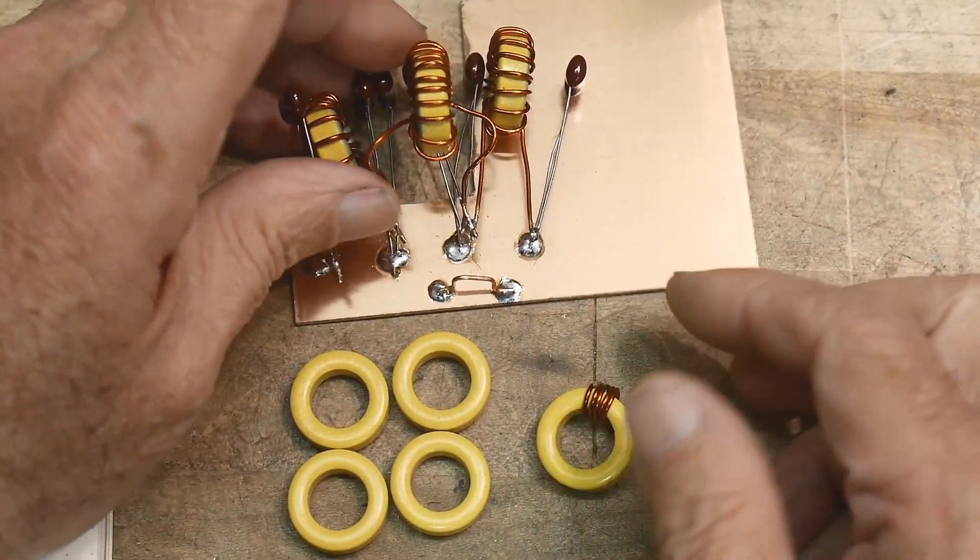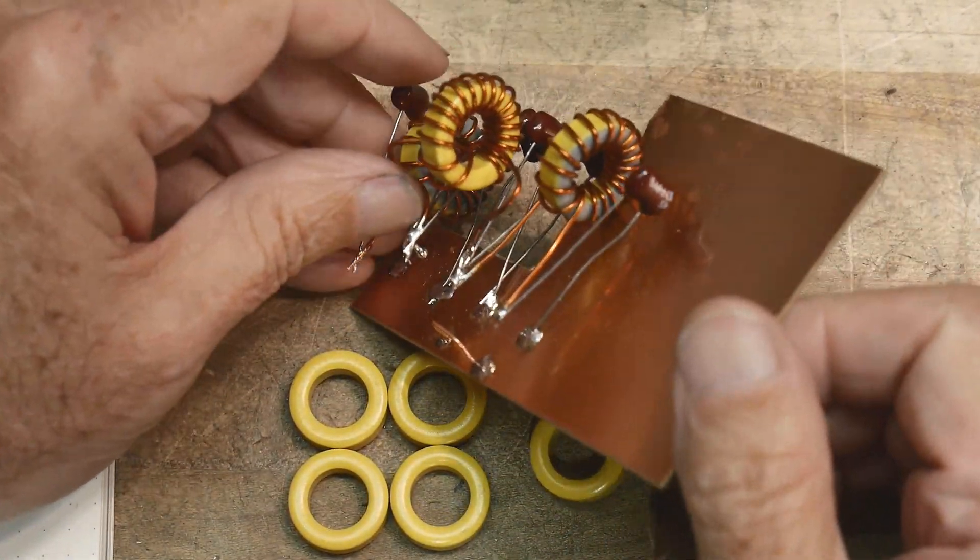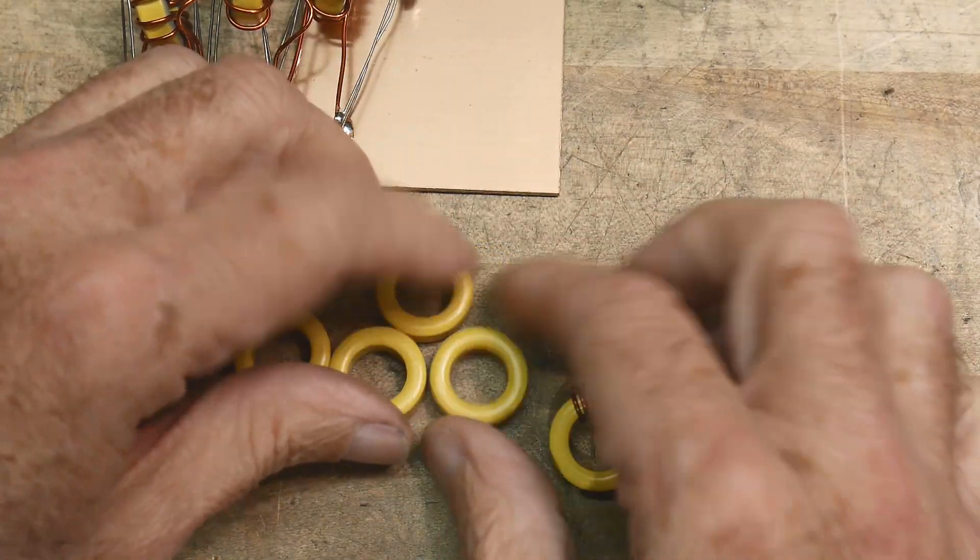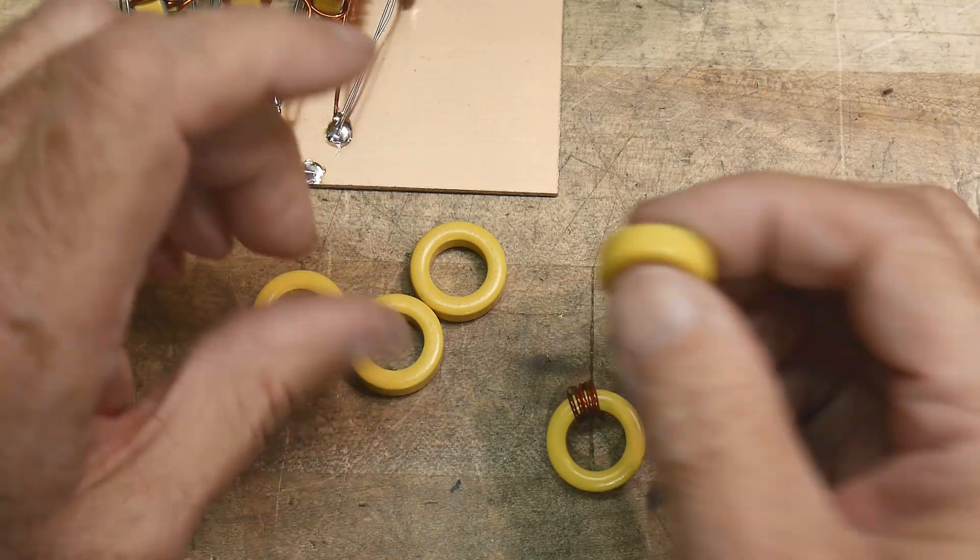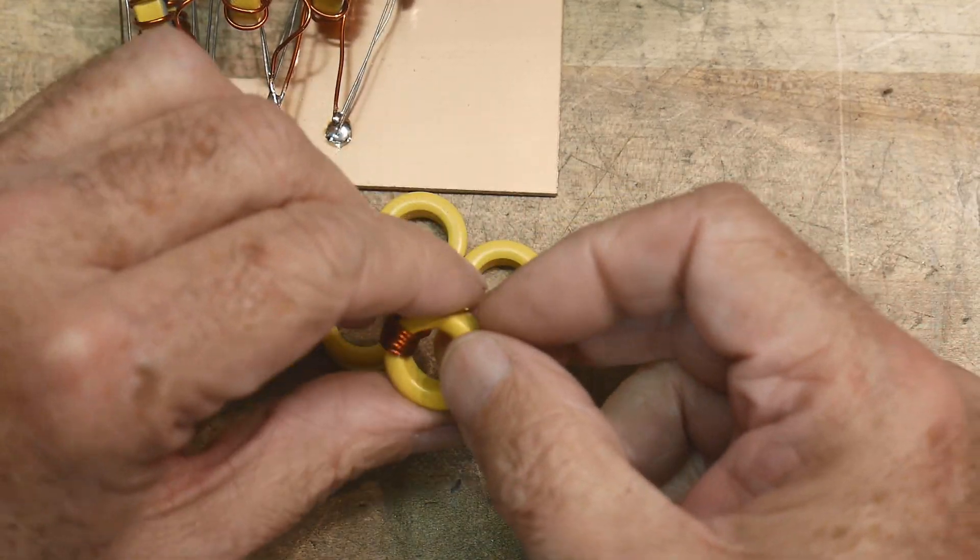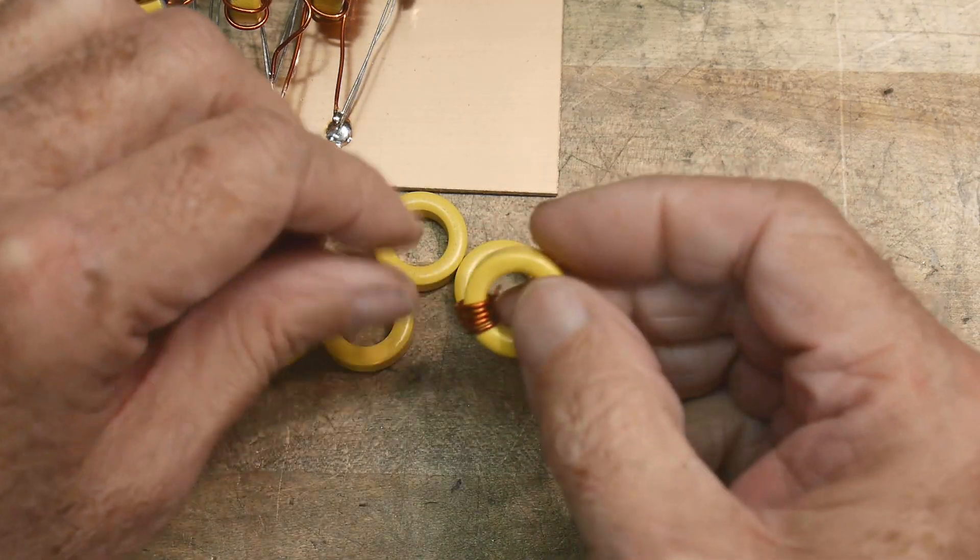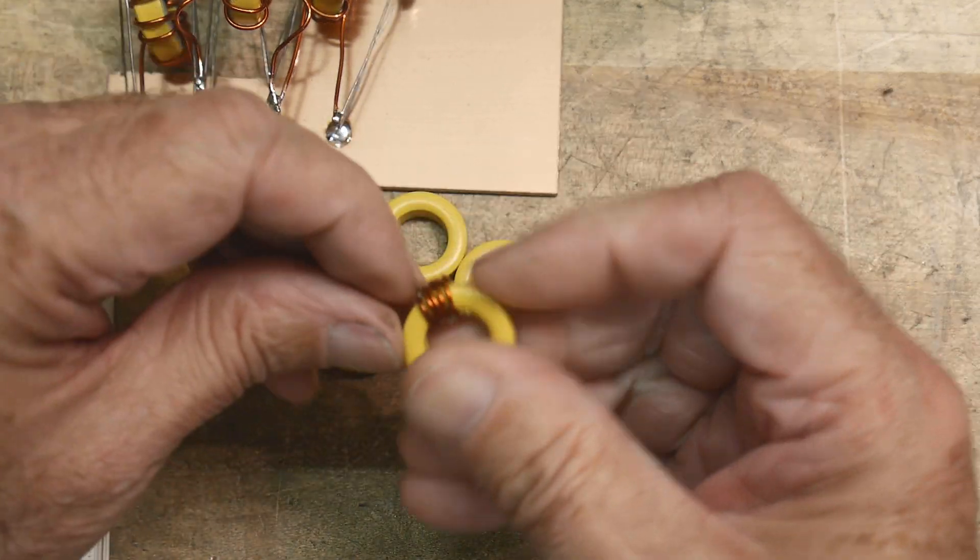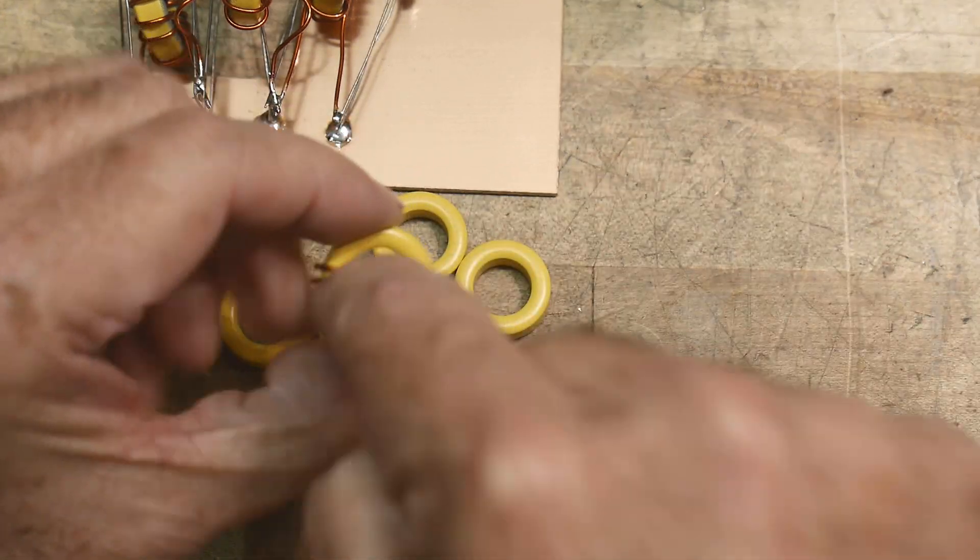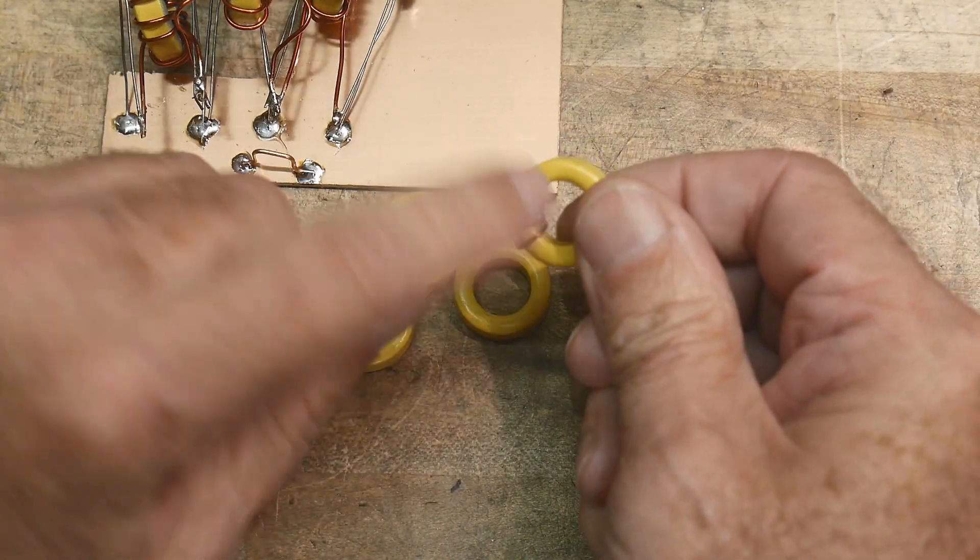Okay, let's talk toroids. So I've showed these toroids that I made, and they are donuts, toroids, and then you put wire around it. But you want to put some wire around it, you count the number of turns, and you can count the number of turns, how many wires go through the center?